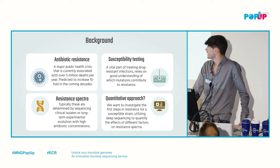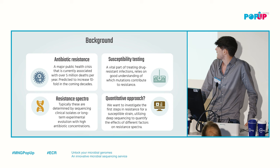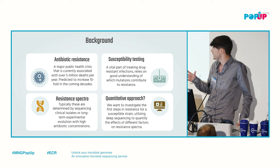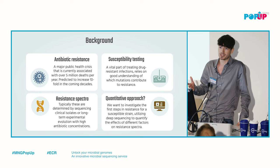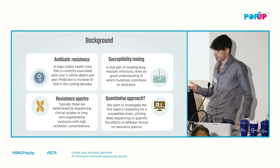Some background: antibiotic resistance is a major public health crisis that is only continuing to get worse in the coming decades. A key weapon in our arsenal is antibiotic susceptibility testing — looking at the genome of an infectious bacterium, finding which mutations provide resistance to different antibiotics, and tailoring treatment based on that information. That relies on understanding what mutations contribute to resistance, to different antibiotics, and in different strains — what we call the resistance spectrum.